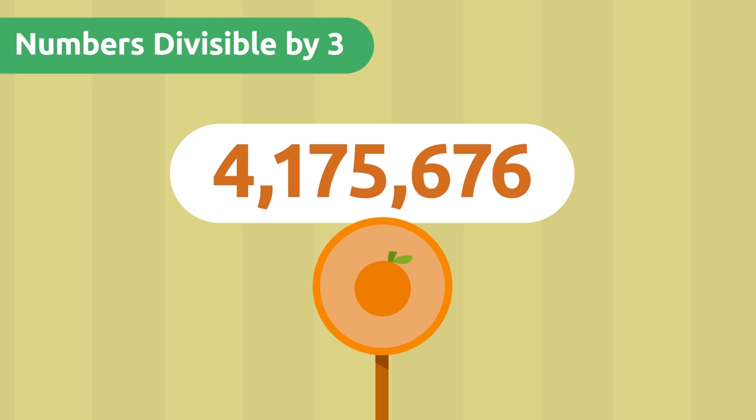Numbers divisible by 9. We also send bananas — they are very healthy. There are 361,017 bananas and we'll send 9 per box. The divisibility rule of 9 is calculated in the same way as the rule for 3. We have to add its digits, divide the result by 9, and check that the remainder is zero.